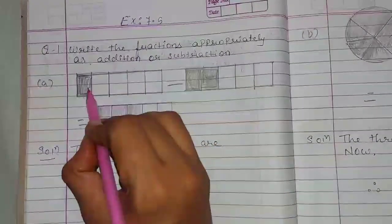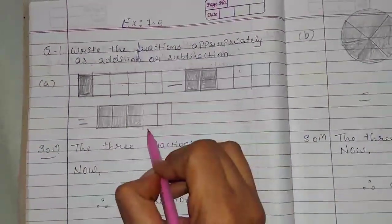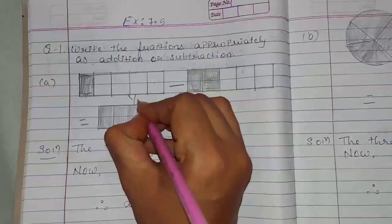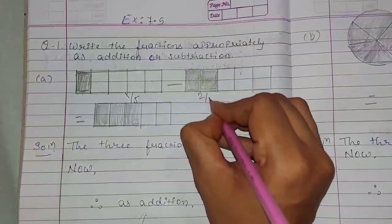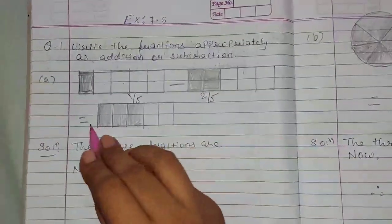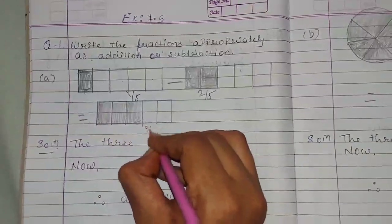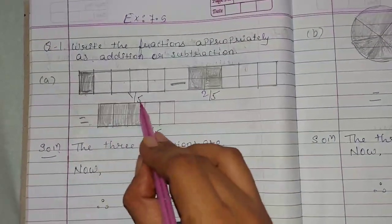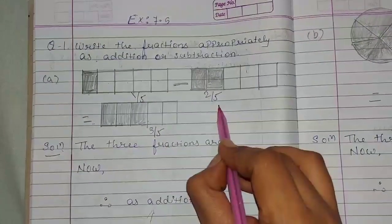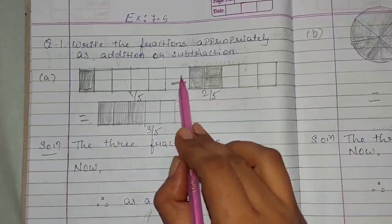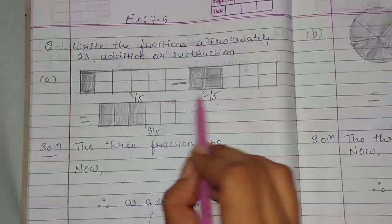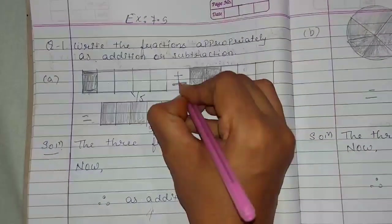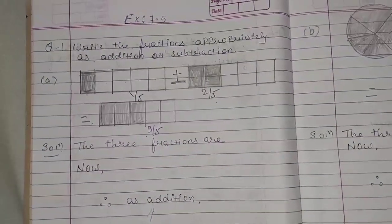A. The first figure has 1, 2, 3, 4, and 5 blocks for each figure. The first figure has 1 part shaded, so 1 upon 5. Here two parts are shaded, so 2 upon 5. That equals three parts shaded, so 3 upon 5. So 1 upon 5 and 2 upon 5 — if we do addition, we get 3 upon 5. Since 1 plus 2 equals 3, the addition sign will come and the answer is 3 upon 5.